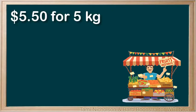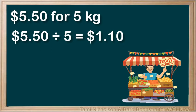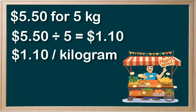If you have a multiple unit price, such as $5.50 for 5 kilograms of potatoes, and want to find the single unit price, divide the multiple unit price by the number of units. So $5.50 divided by 5 equals $1.10 per kilogram. Rates and unit rates are used to solve many real-world problems.